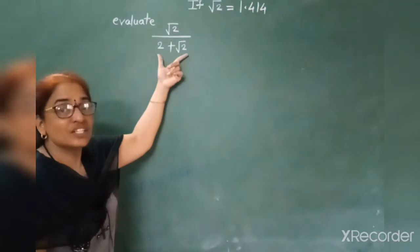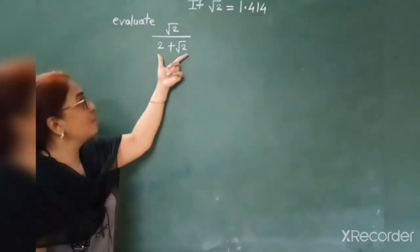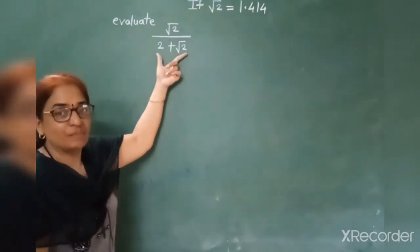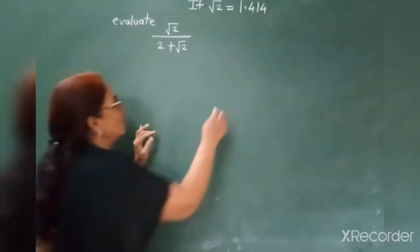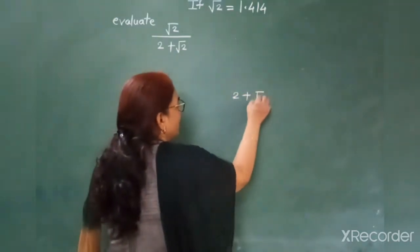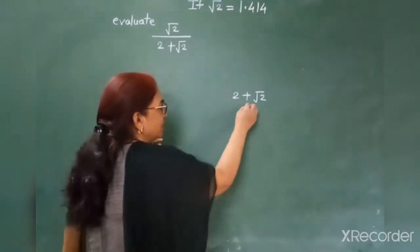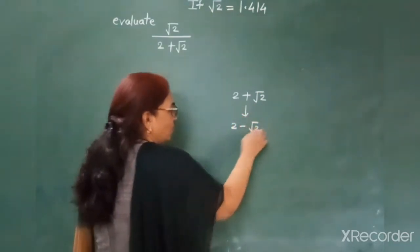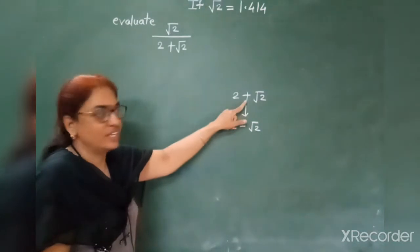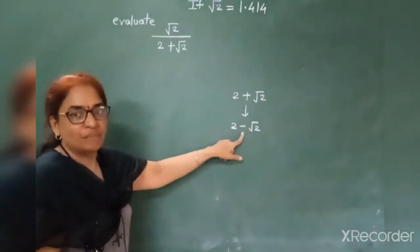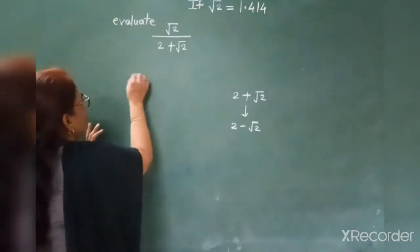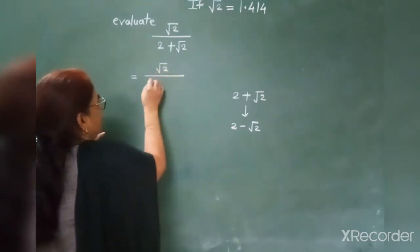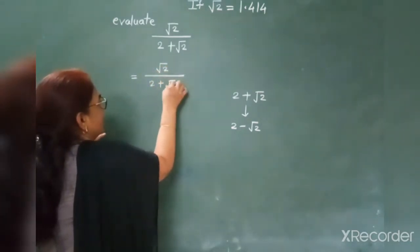The denominator is 2 plus root 2, and its conjugate will be 2 minus root 2. Multiply the numerator and denominator of this irrational number by this conjugate.